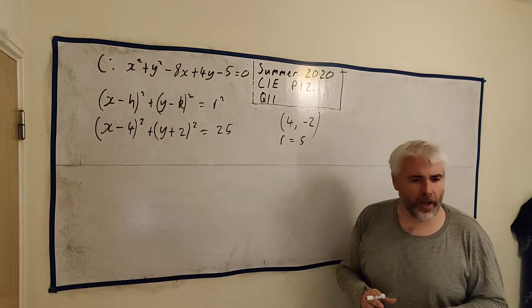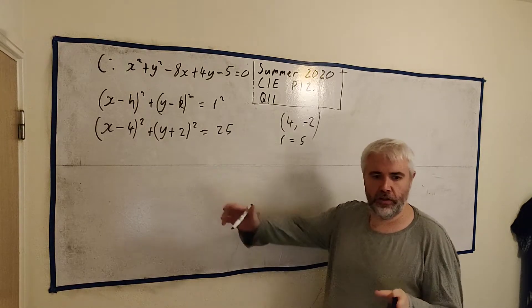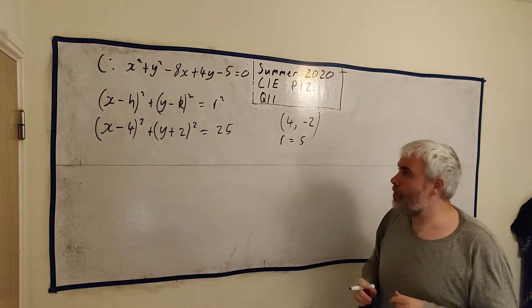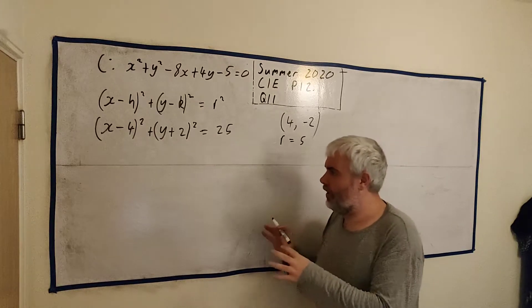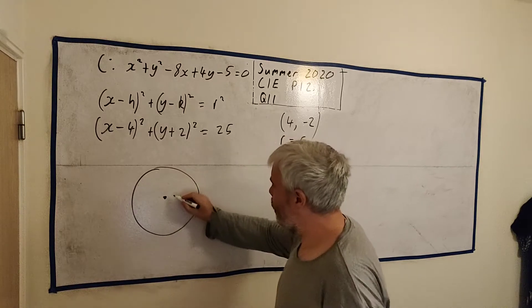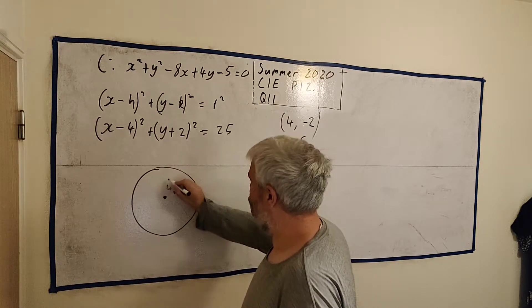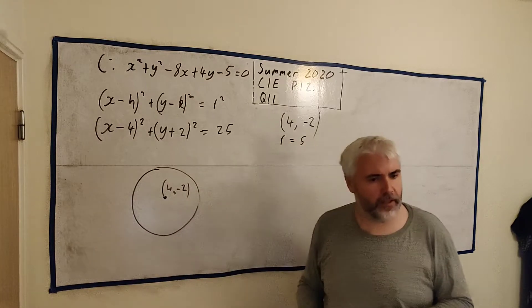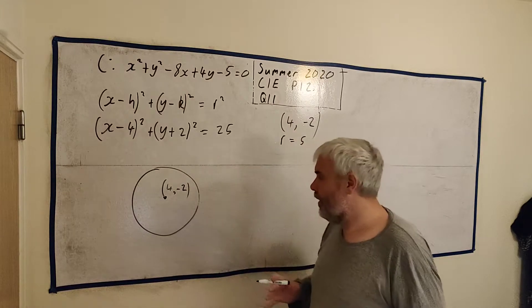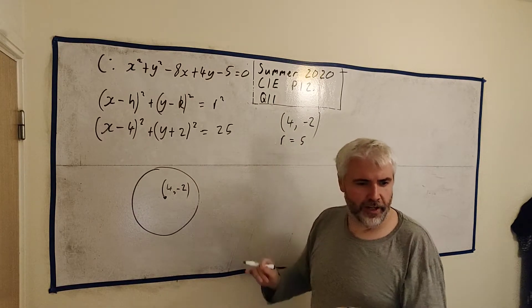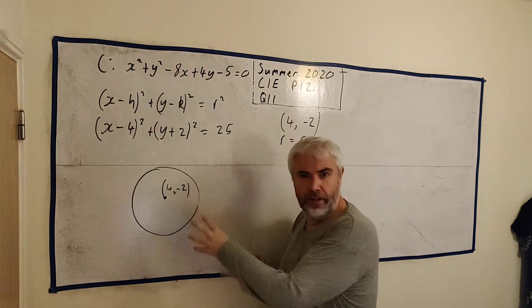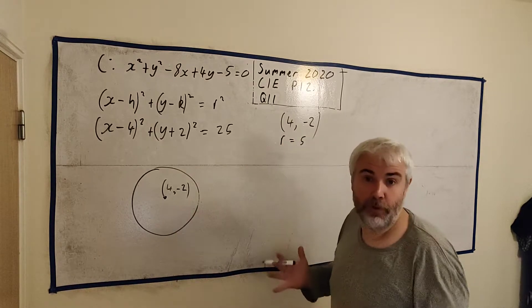Okay so that answer is part a. Part b asks show that the equation of a tangent to the circle at p is, and it gives the answer to that equation. Oh they give us the point p. Let's draw this circle in that case. Here is a circle and here is the center. We have 4 minus 2 and point p is at 1, 2.